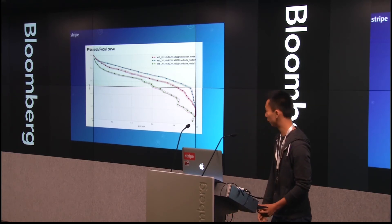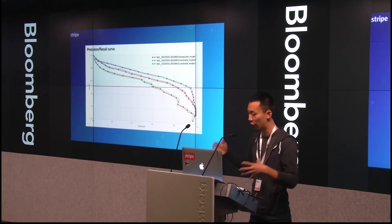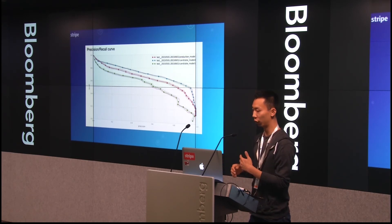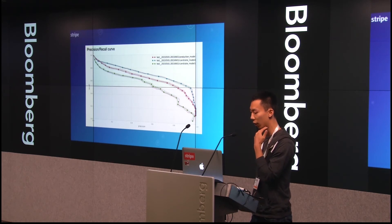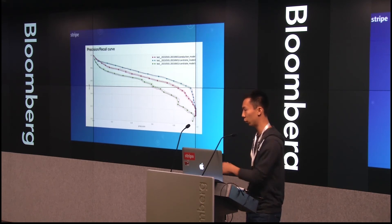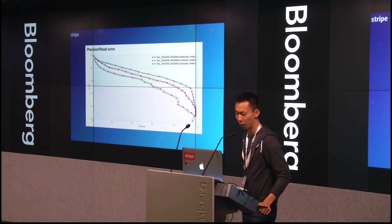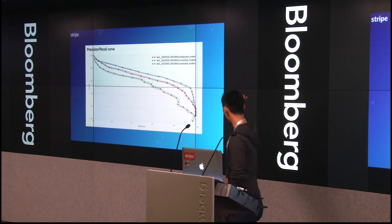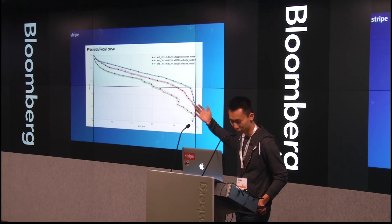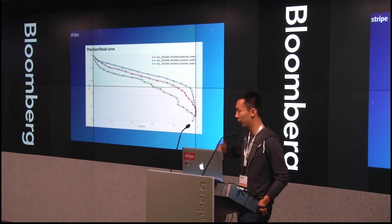The other thing we look at is: how should we actually action this model — what scores should we decline, which scores should we ask for extra verification? The way we do it: we care about a certain level of precision. We want essentially no false positives, because we see so many transactions. We find the point where precision is around 98% and just live with whatever recall that gives us — the score associated with that data point is where we'll run the model.